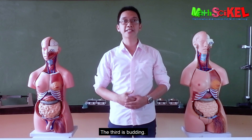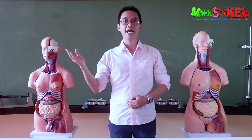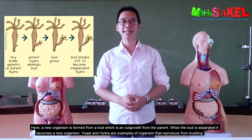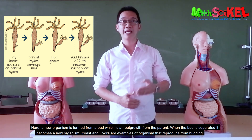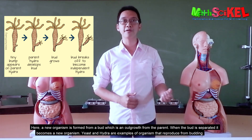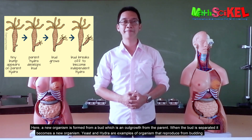The third type is budding. Here, a new organism is formed from a bud, which is an outgrowth from the parent. When the bud is separated, it becomes a new organism. Hydra is an example of an organism that reproduces by budding.